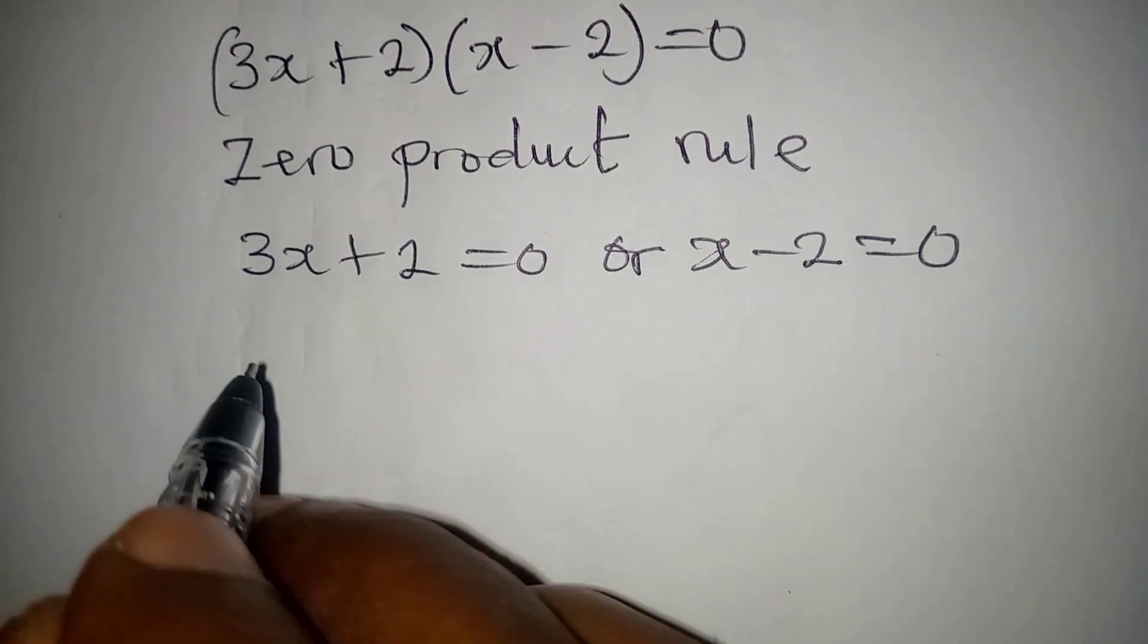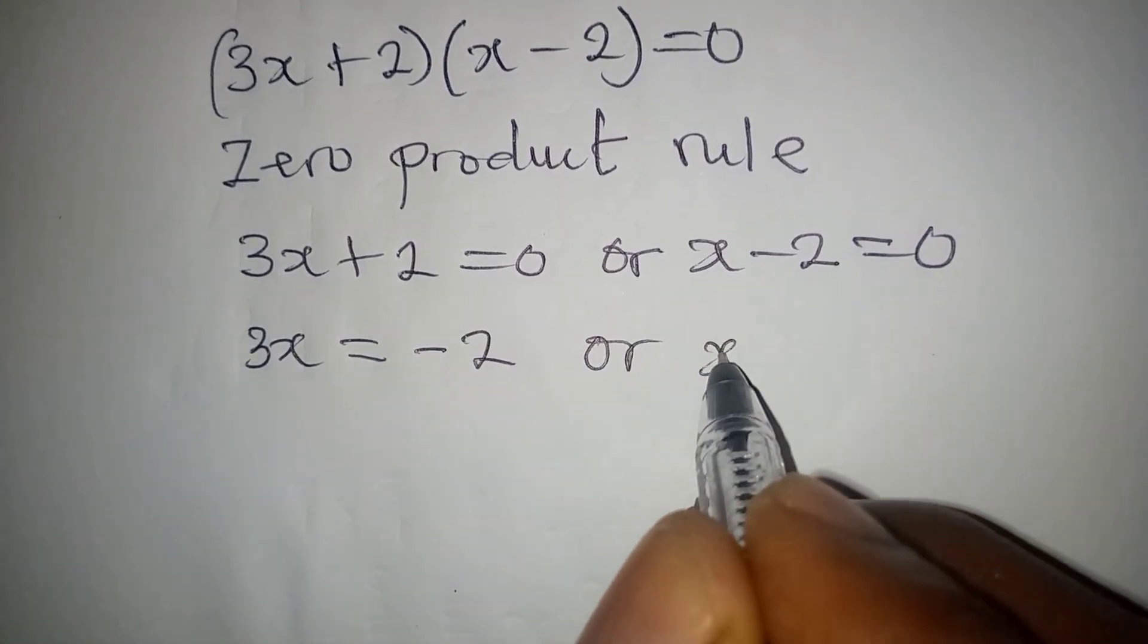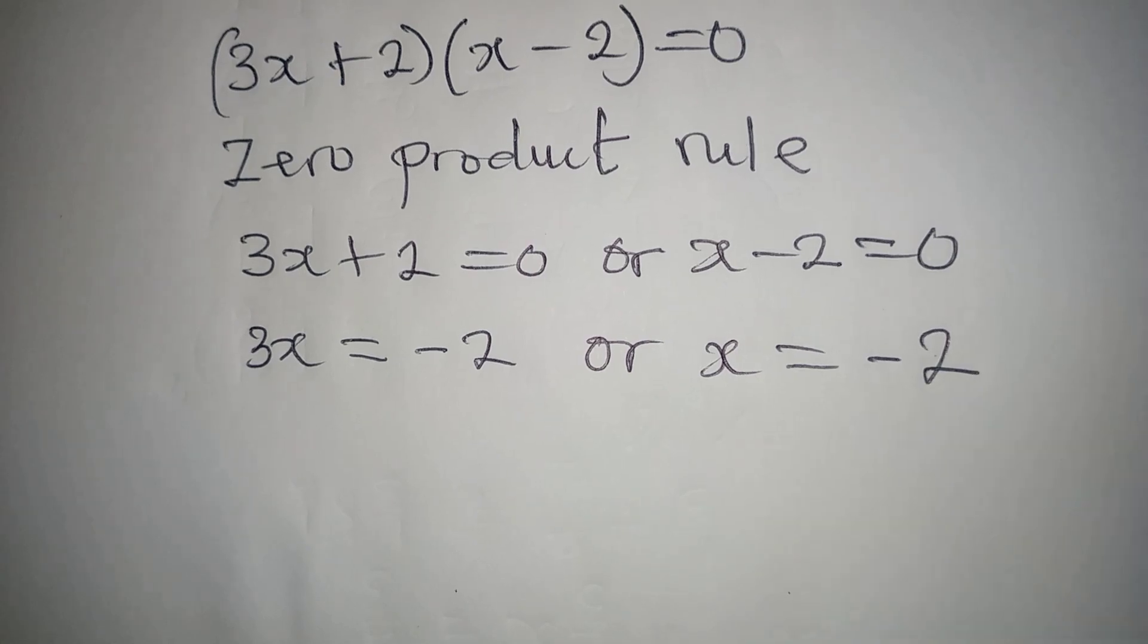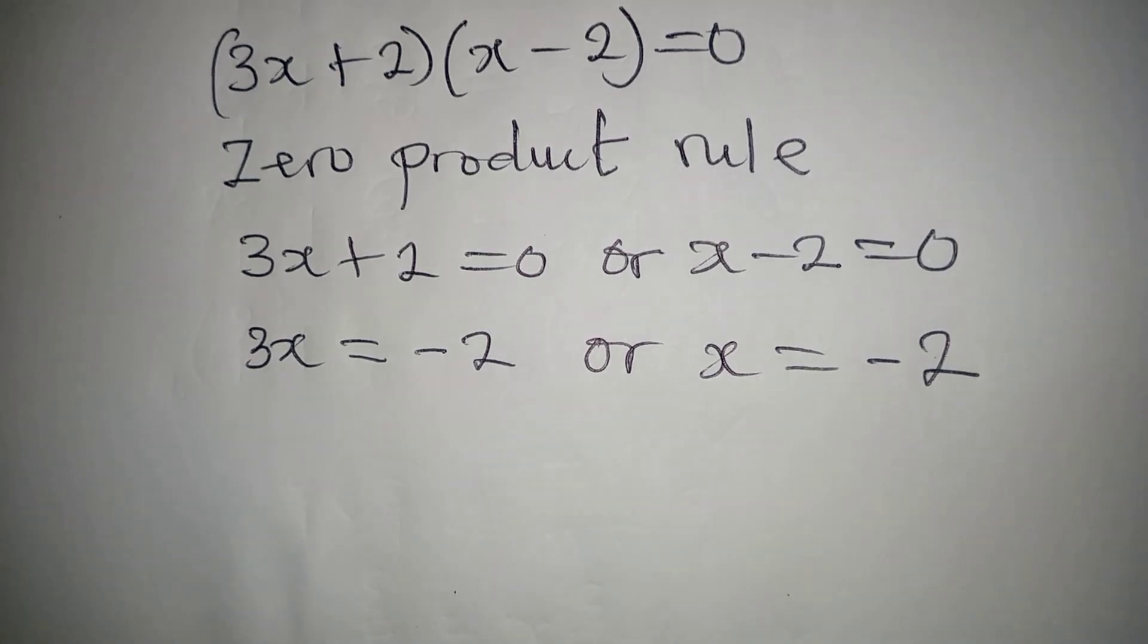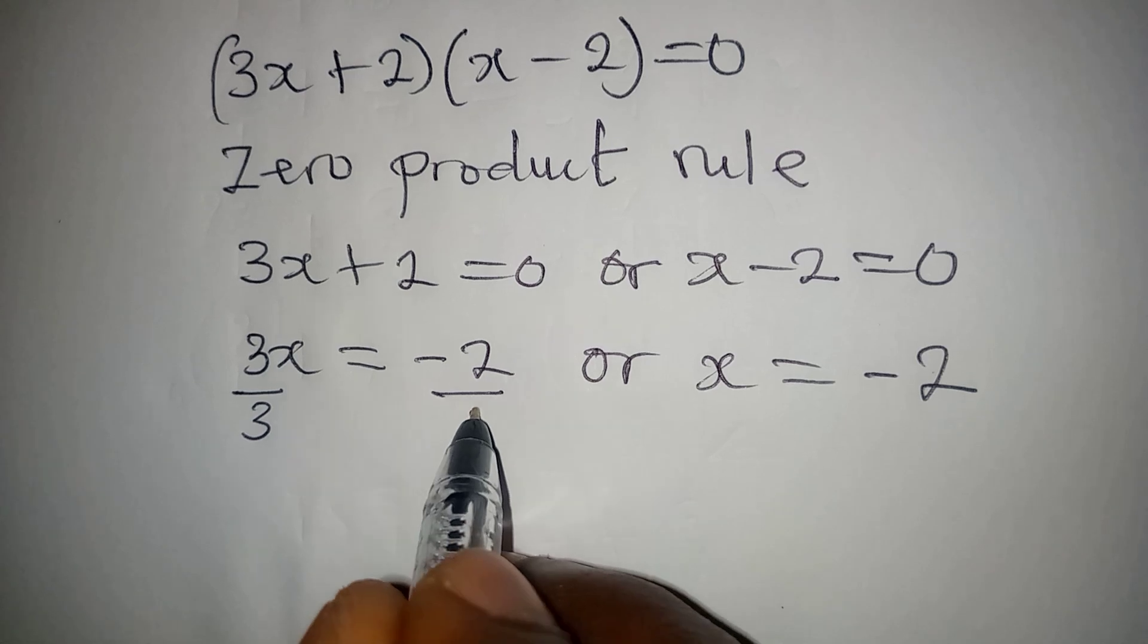If this is the case, then 3x will be equal to minus 2, or x will be equal to minus 2. And then you have to divide both sides by 3, and divide this by 3 as well.